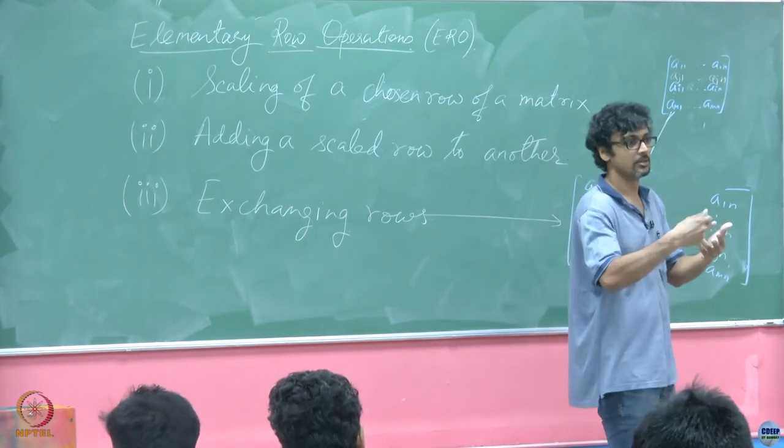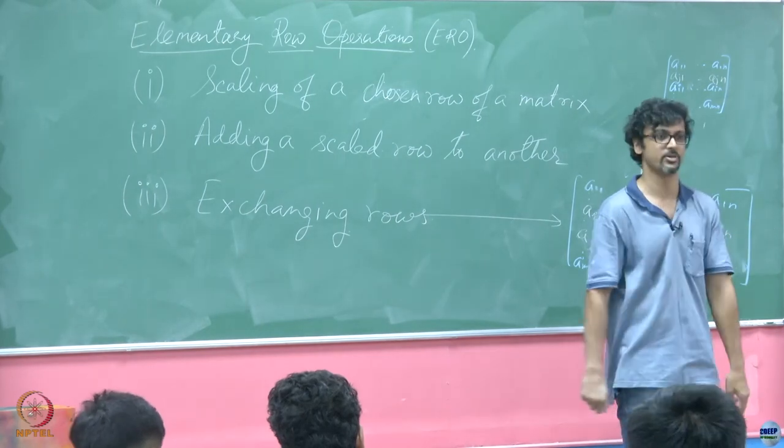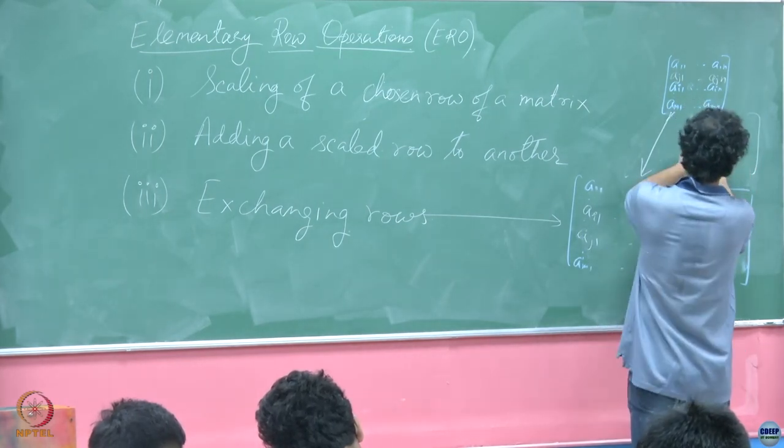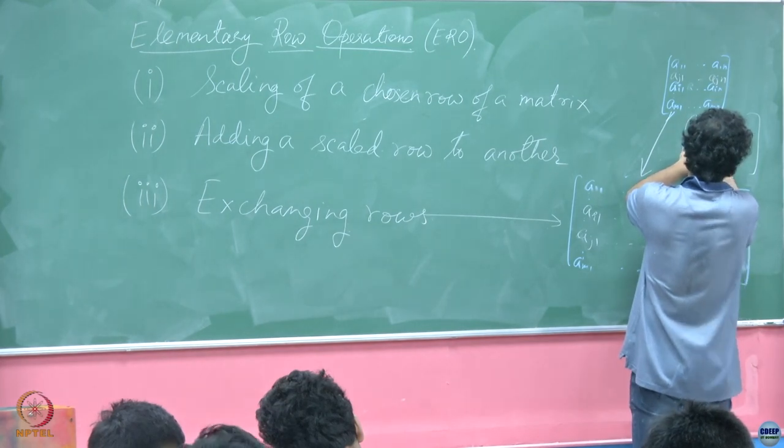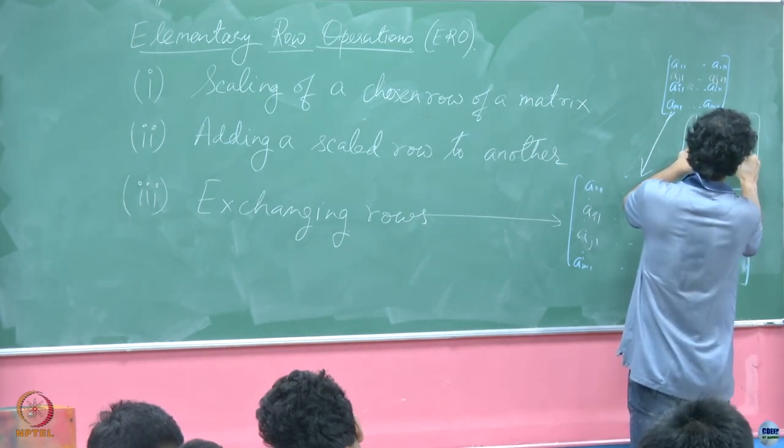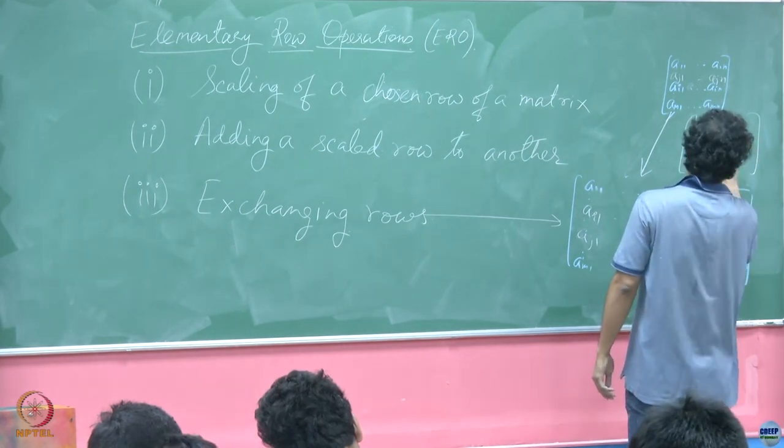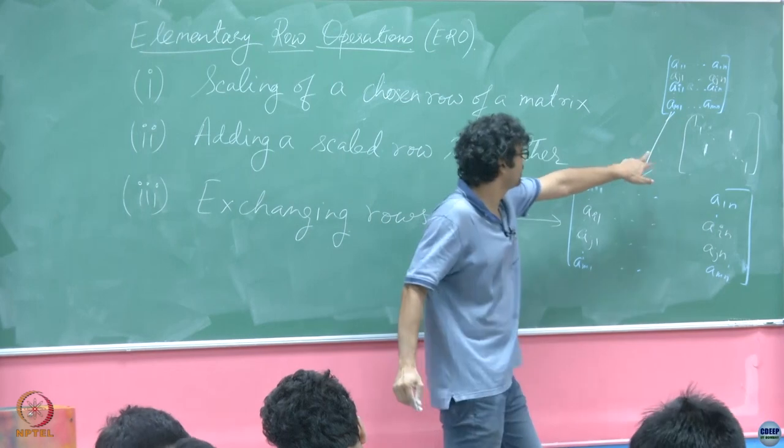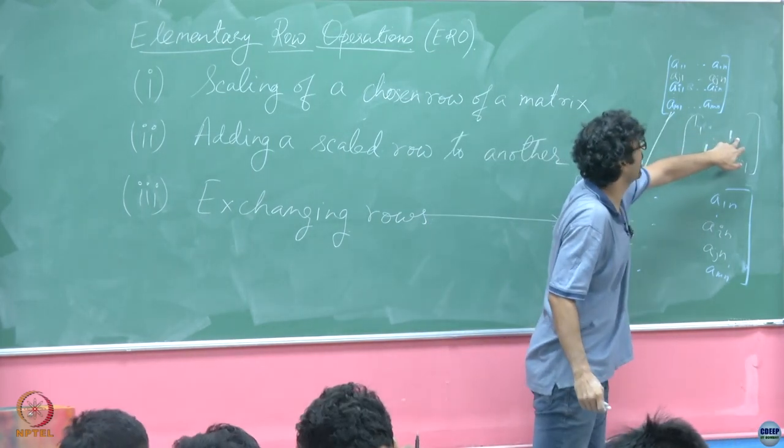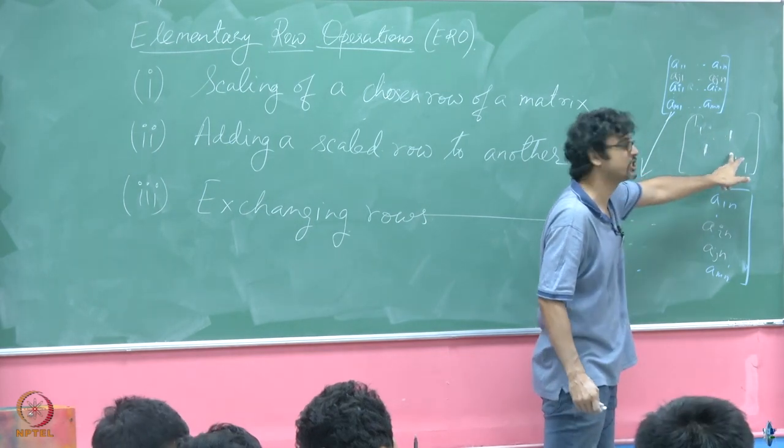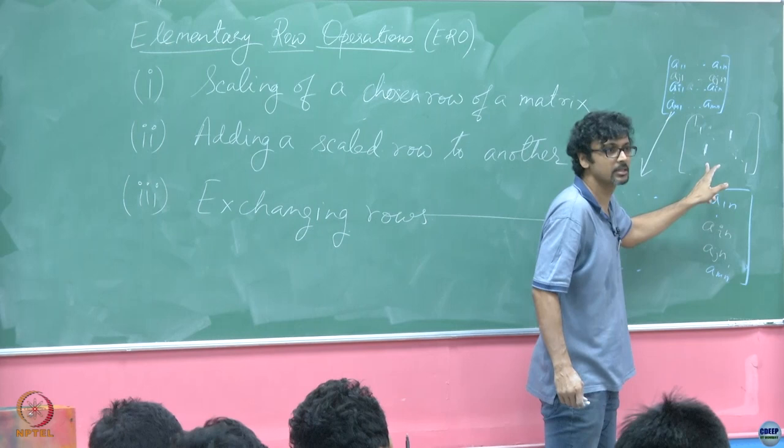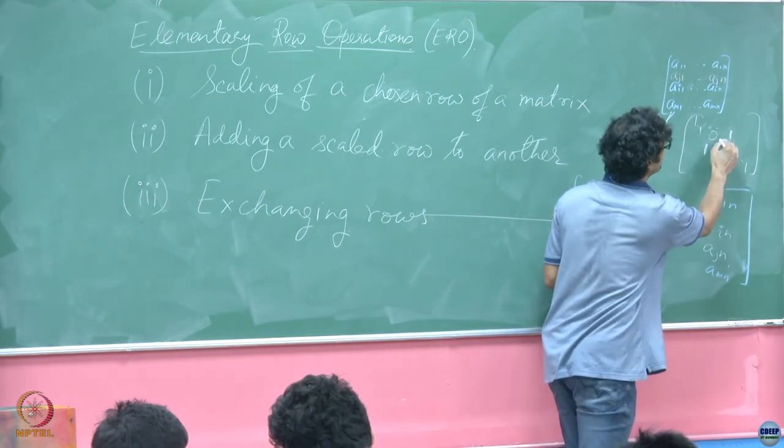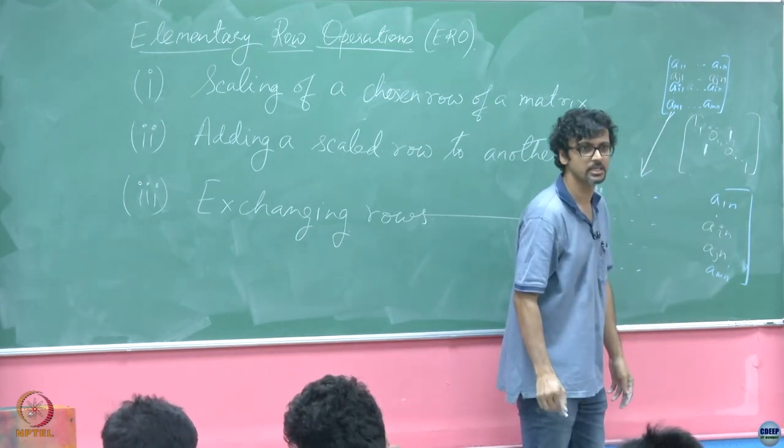Because you are basically flipping two rows or two columns, whichever way you view it, of the identity matrix itself. So, here is what it would look like. In place of the j-th one, you will have one here and place of the i-th one, you will have one here. I mean you get the idea. So, in the j-th position here, you have it in the i-th position here. Earlier you had i i-th and j j-th, but now you have i j-th and j i-th. Those two positions have ones and the diagonals become 0 instead.